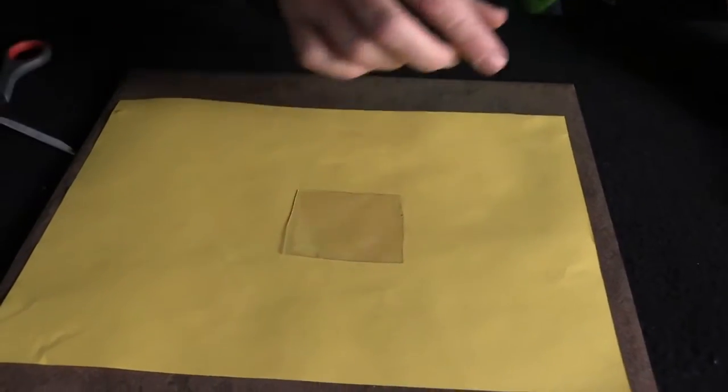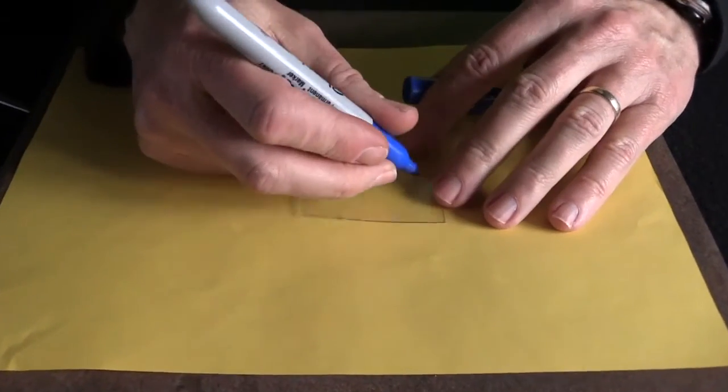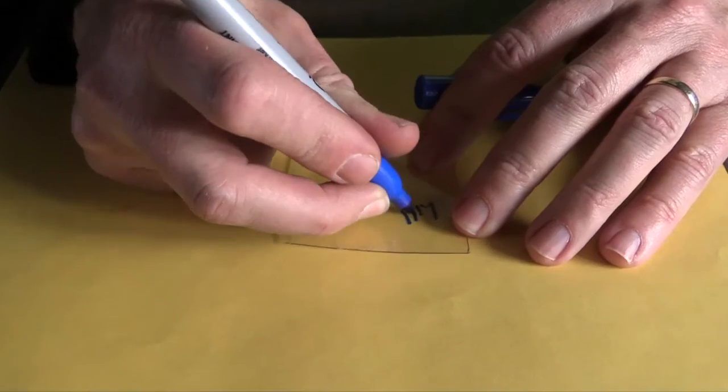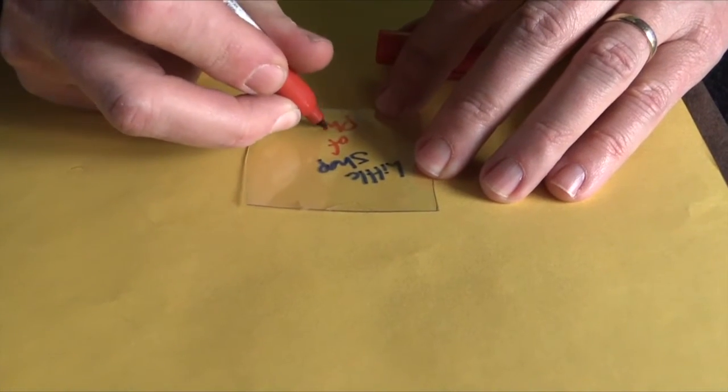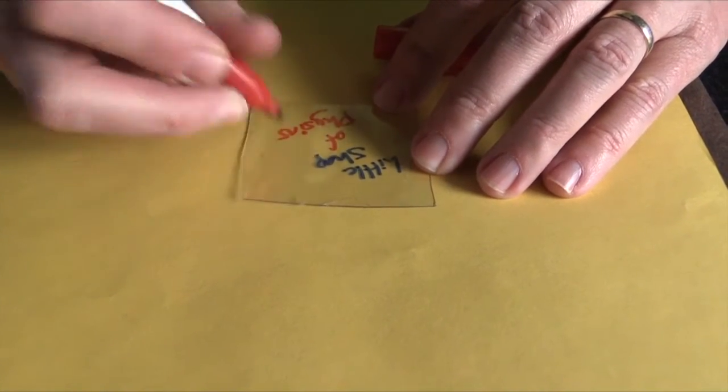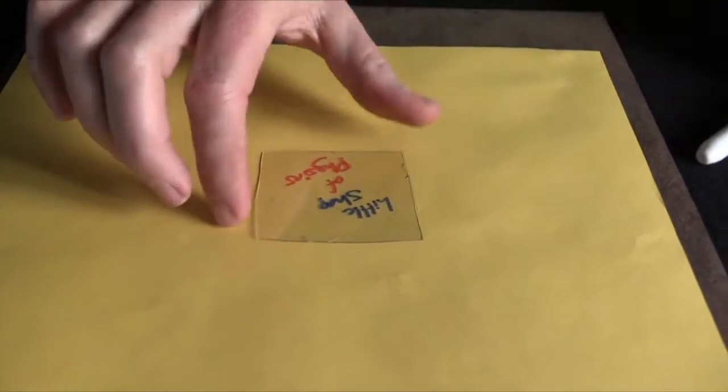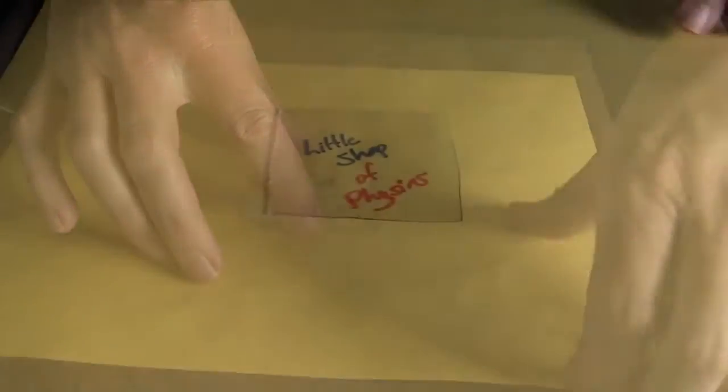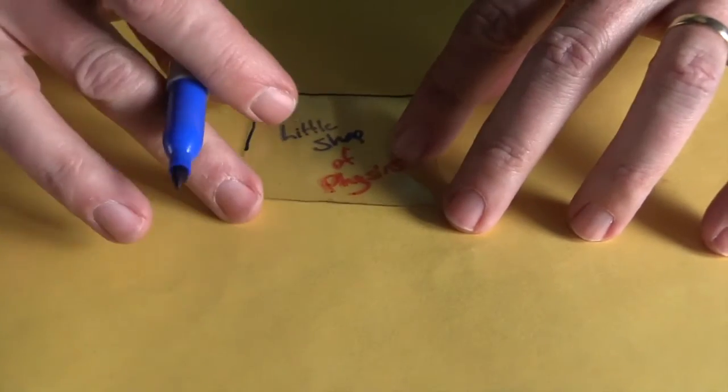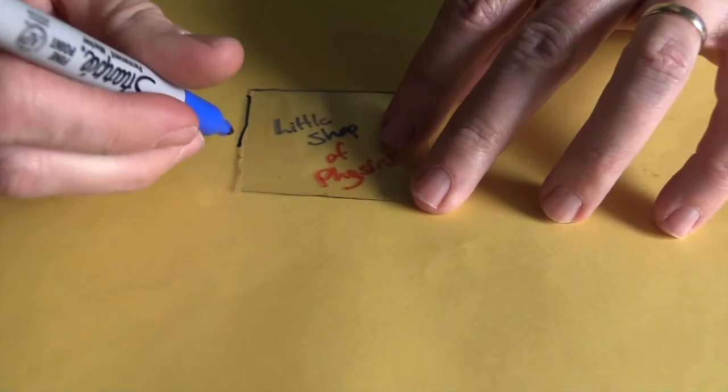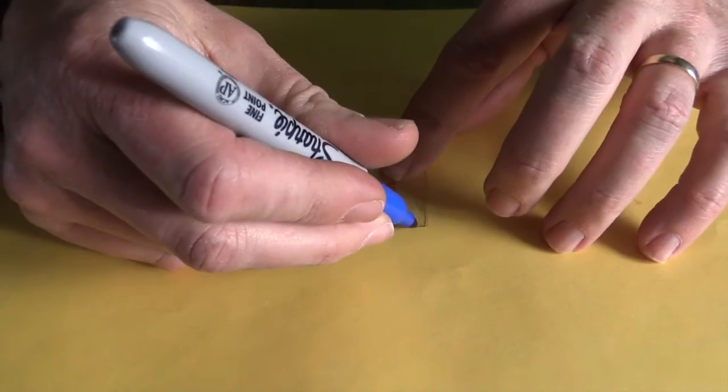I've got a piece of plastic and I'm going to write on this. Notice the plastic is clear right now. I'm going to mark the original size of the square so we can watch the size change.